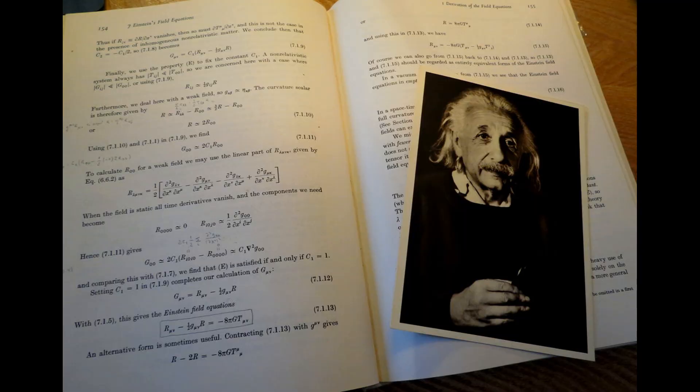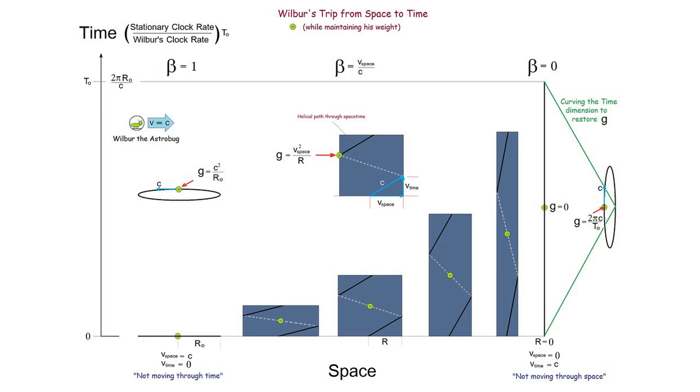General relativity is a theory of gravitation that describes the relationships between matter and the geometry of the universe. It is a mathematical framework that allows us to describe the distortion of space and time caused by the presence of matter. The mathematical equations of general relativity allow us to understand the expansion of the universe and the formation of large-scale structures.